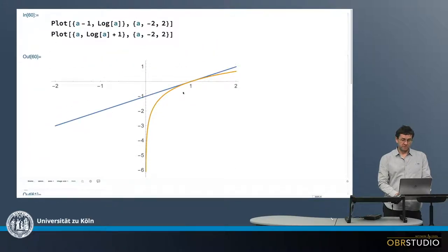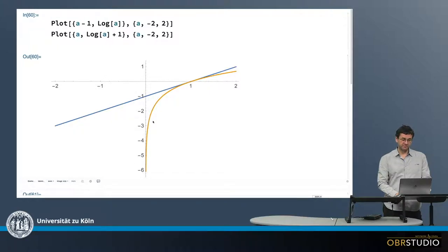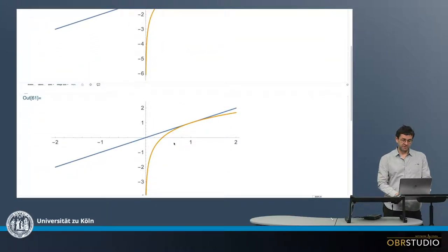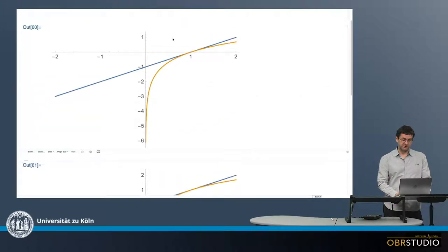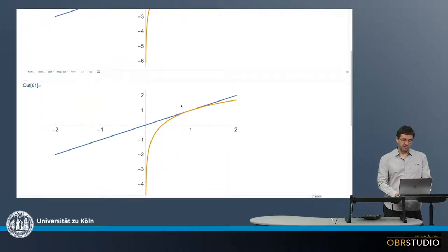And here the interception is at the origin because there is no y-axis intercept. However, the logarithmic function is shifted upwards. This is this plus 1. So this function shifted upwards from this position, shifted upwards 1.